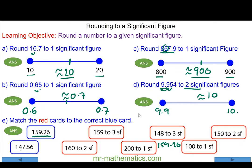For the next one, the four doesn't round up the one, so this becomes approximately 100. For two significant figures, the nine does round up the five to a six, so 159.26 becomes approximately 160 to two significant figures. And the seven does round up the four to a five, so that becomes approximately 150 to two significant figures.